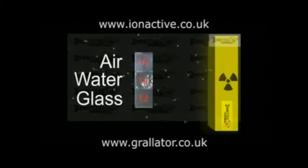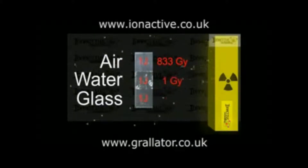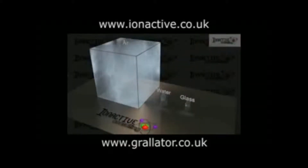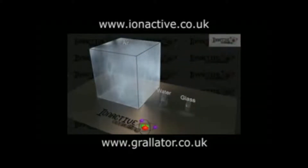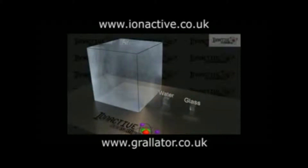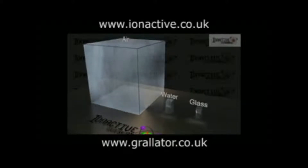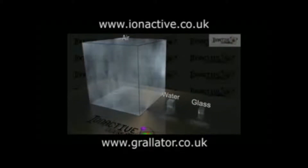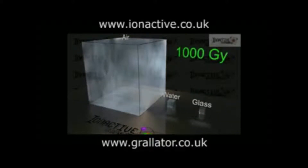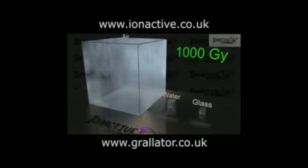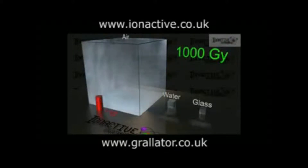The air region will have received 833 grey, the water region 1 grey, and the glass 0.4 grey. The effect of absorbing the energy is also different for the different materials. For example, consider the effect on the temperature of each of our 1kg cubes of air, water, and glass receiving an absorbed dose of 1000 grey. This amount of energy is enough to raise the temperature of the cube of air by 1 degree Celsius.